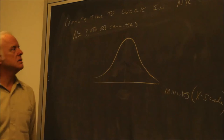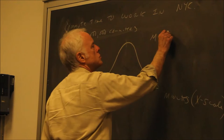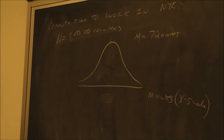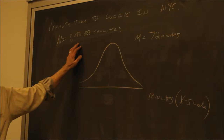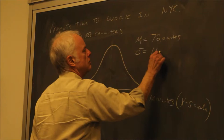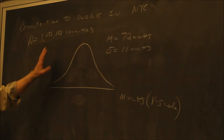Under this curve are 3 million observations. When we calculated the mean — mu is the population mean — it came out to 72 minutes. Sigma, the standard deviation of the population, was 10 minutes. So the mean and the standard deviation come from the 3 million people that commute to work.